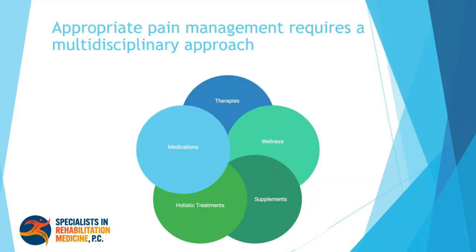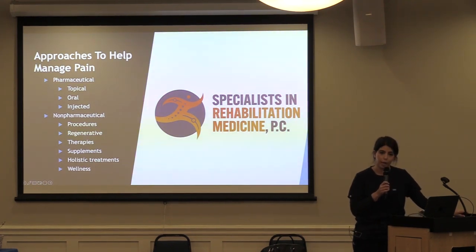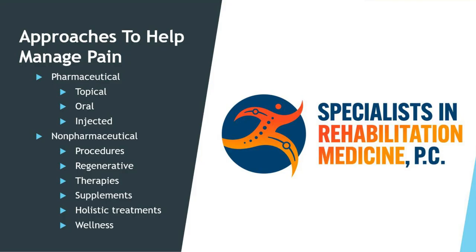Appropriate pain management requires a multidisciplinary approach, which includes different kinds of therapies, medications, overall well-being, vitamins and supplements, and holistic treatments. We can approach pain management pharmaceutically — with medications — or non-pharmaceutically. Pharmaceutical options include topical medications like gels and creams, oral medications, and injectable medications. Non-pharmaceutical approaches include different procedures, regenerative medicine, therapies, supplements, and holistic treatments.